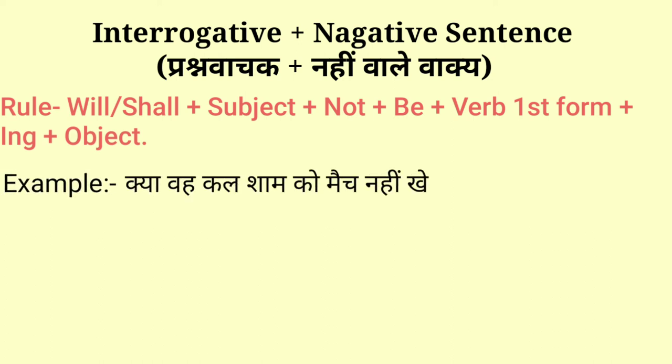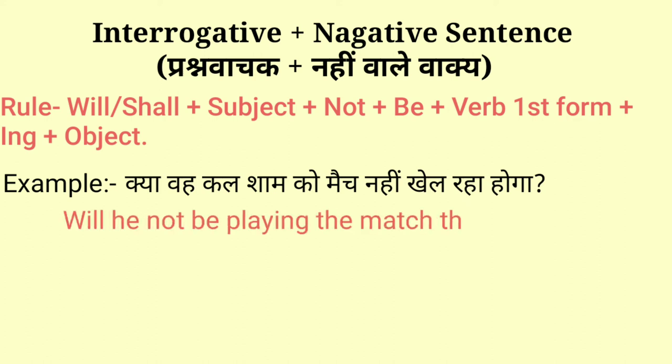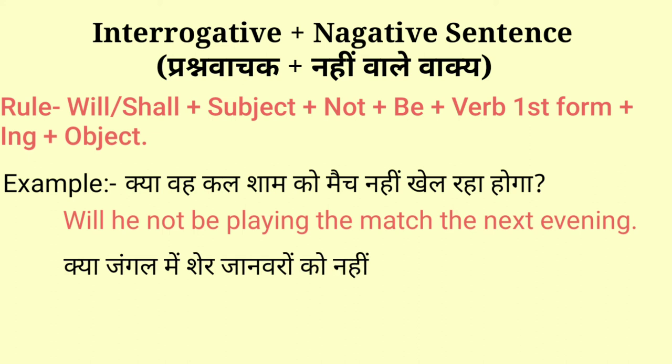For example: 'Kya vah kal shaam ko match nahi khel raha hoga?' — Will he not be playing the match the next evening? In this, 'will be' is the helping verb, 'he' is the subject, 'not' is used for nahi, 'playing' is verb first form + ing, and the rest is the object.